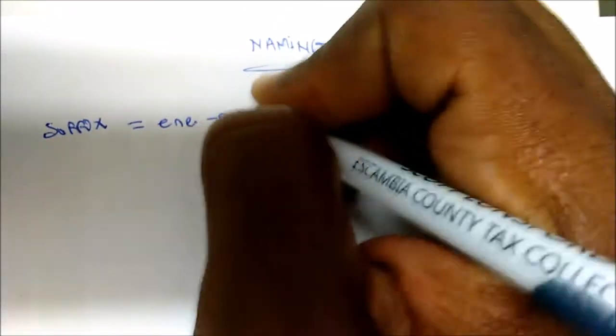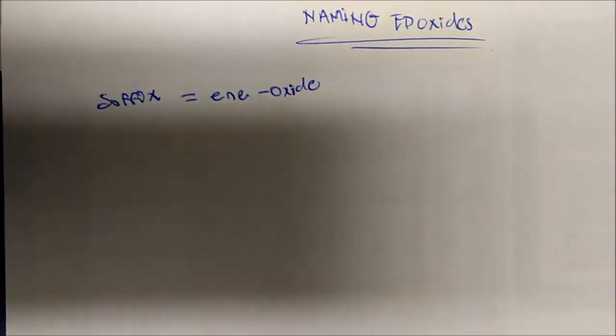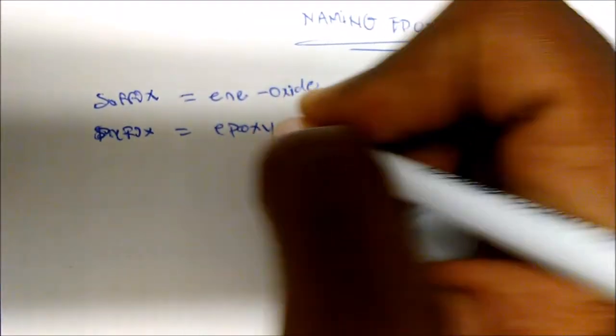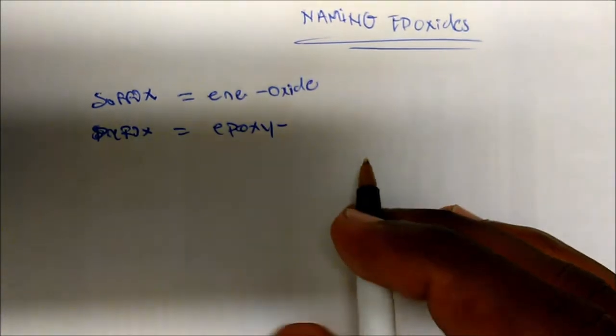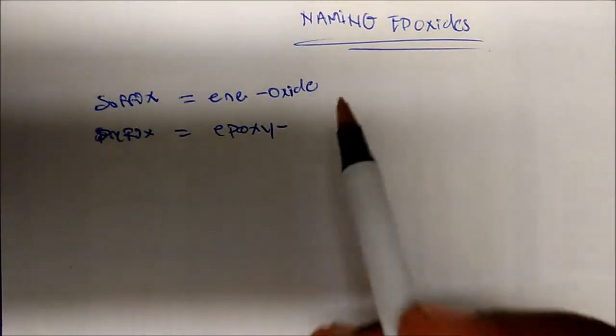Epoxides can usually be named with the suffix 'en oxide,' and they can also be named with the prefix 'epoxy,' which is where the IUPAC name comes in. Let's look at a couple of structures and run through what these mean.